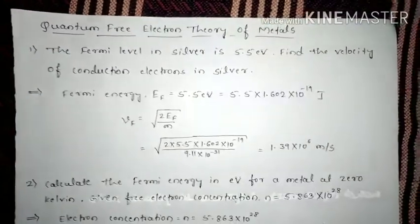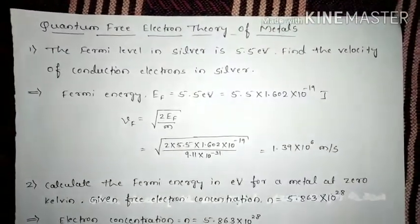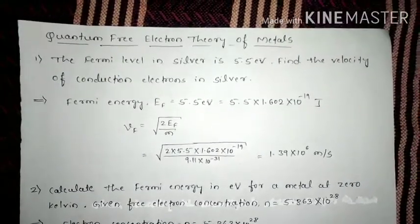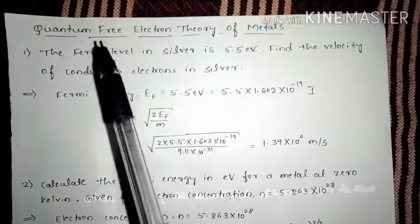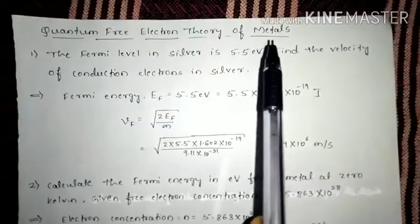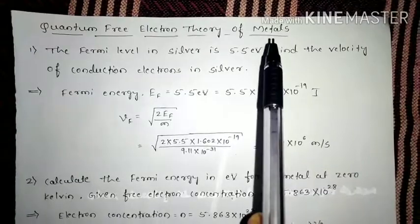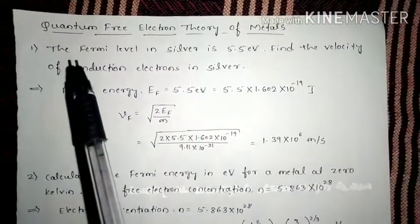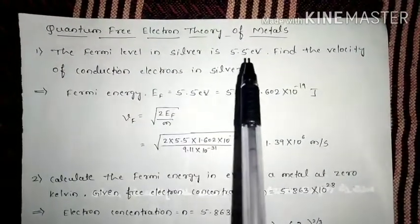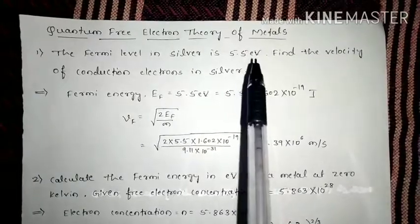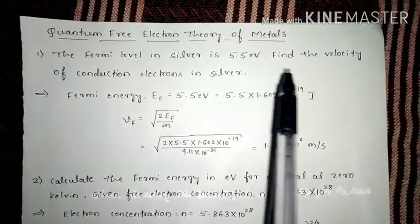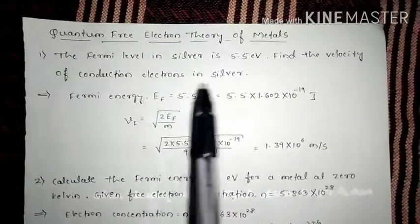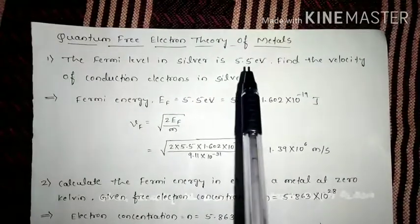Hello dear students, today we will solve some problems on quantum free electron theory of metals. The first problem: the Fermi level in silver is 5.5 eV — find the velocity of conduction electrons in silver.